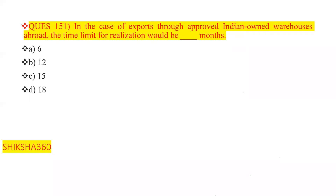Question Number 151: In the case of exports through approved Indian-owned warehouses abroad, the time limit for realization would be how many months? Options are: 6 months, 12 months, 15 months, or 18 months. The correct answer is 15 months.